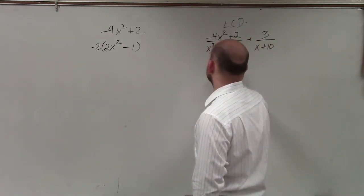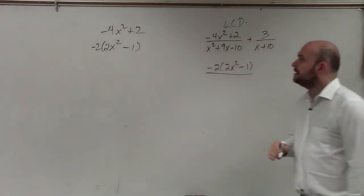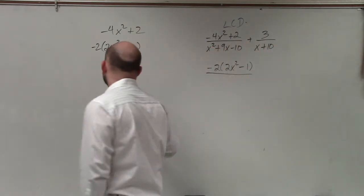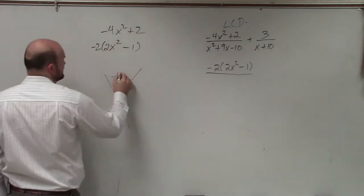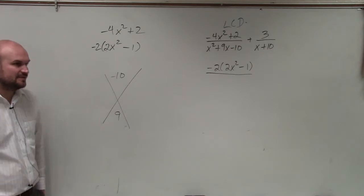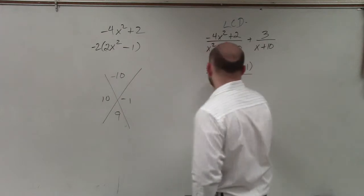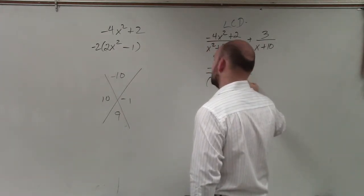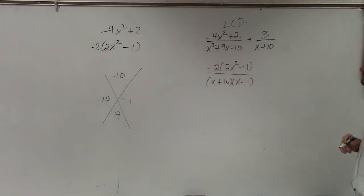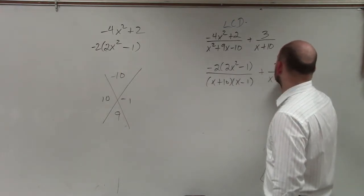So let's factor that to -2(2x² - 1). Over our denominator here, if I write this as a trinomial, I have -10/9. What two numbers multiply to give you -10 and add to give you positive 9? That would be positive 10 and -1. So I can factor that into (x + 10)(x - 1). And then plus 3/(x + 10).